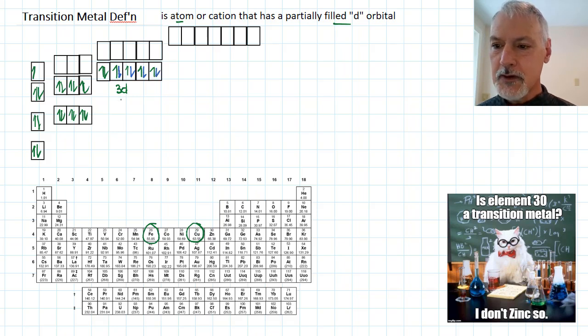So the copper atom itself wouldn't fit this definition. However, copper does tend to form an ion with a 2 plus charge. And if we remove the highest energy level, so we'll remove that one and then that one, now we would see copper with a plus 2 charge does have a partially filled d-orbital. So hence we say it's an atom or a cation with a partially filled d-orbital.